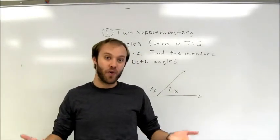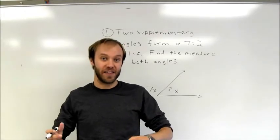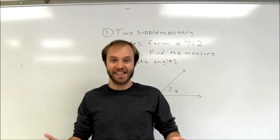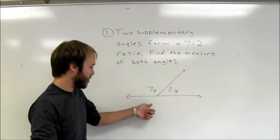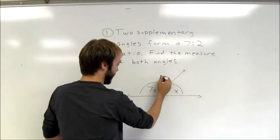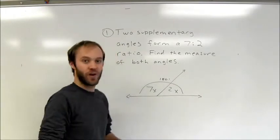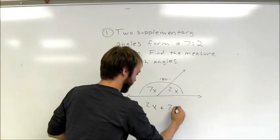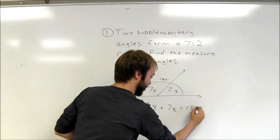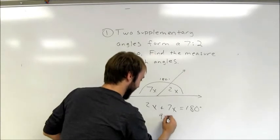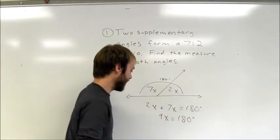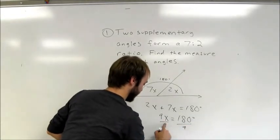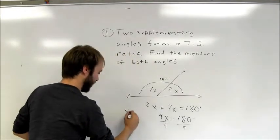When writing an equation, ask yourself: do I have things that are equal to each other, or do I have things that add up to a certain sum? In this case, the values add up to a certain sum — this whole pair of angles adds up to 180 degrees. So I take 2x, add 7x, and set that sum equal to 180 degrees. I get 9x equals 180 degrees, and dividing both sides by 9, x equals 20.